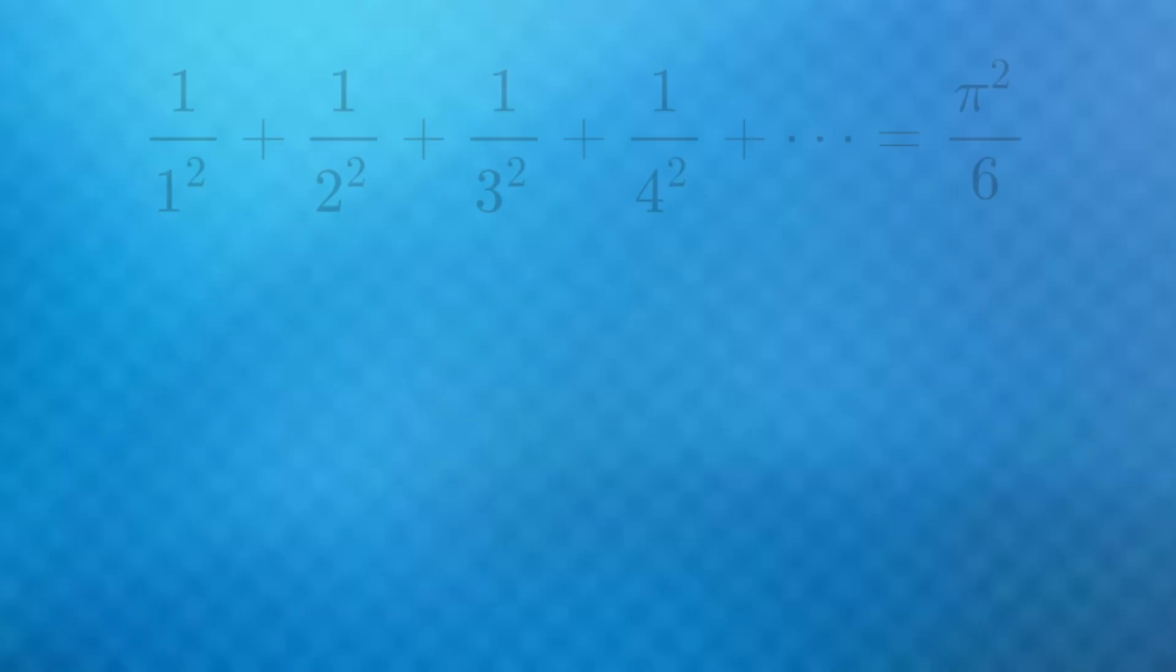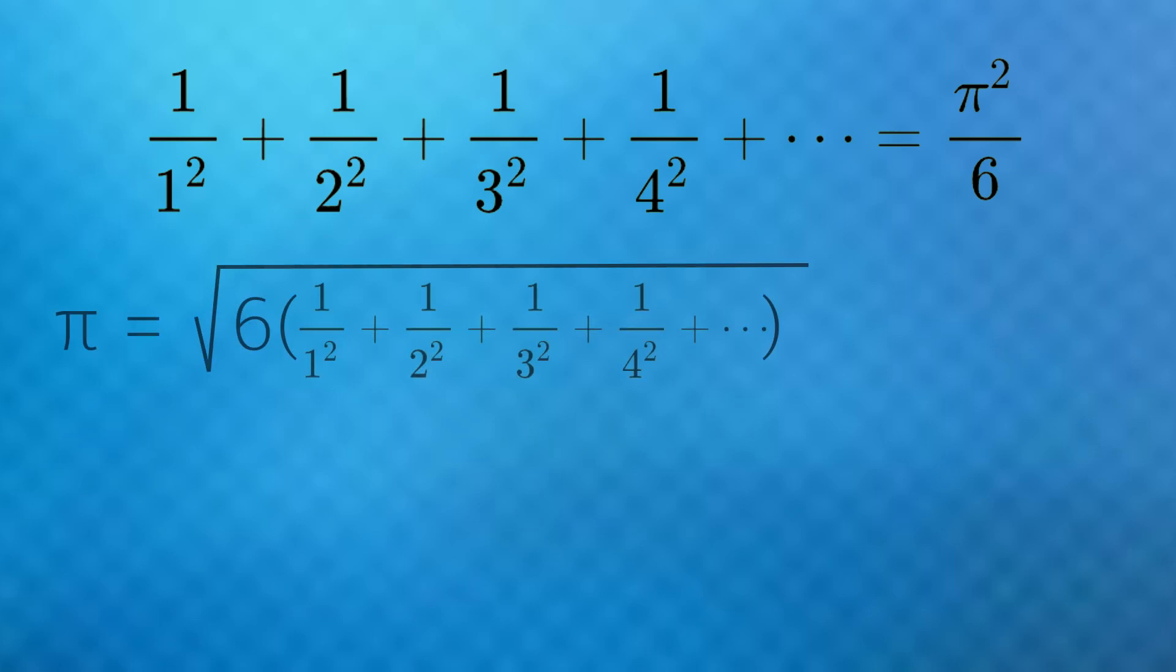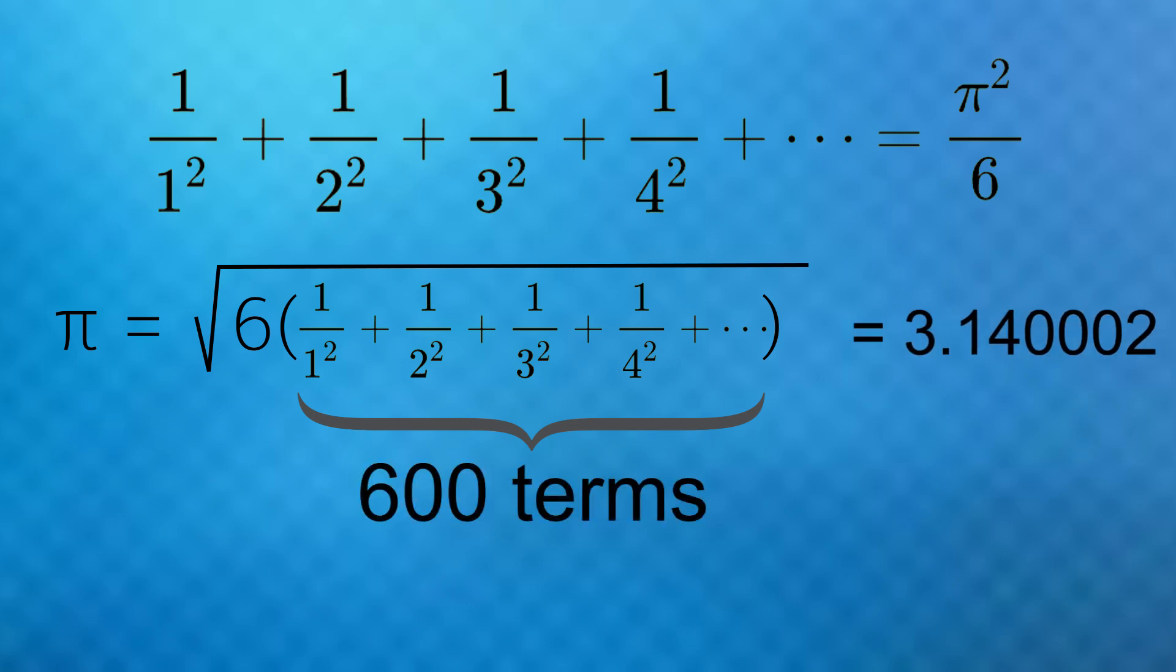For comparison with this series, since it equals pi squared over 6, we can multiply both sides by 6, and then take the square root to get an approximate value for pi. The more terms you have in here, the closer to pi you'll get. It's not until about 600 terms that this even gives you 3 digits of precision.